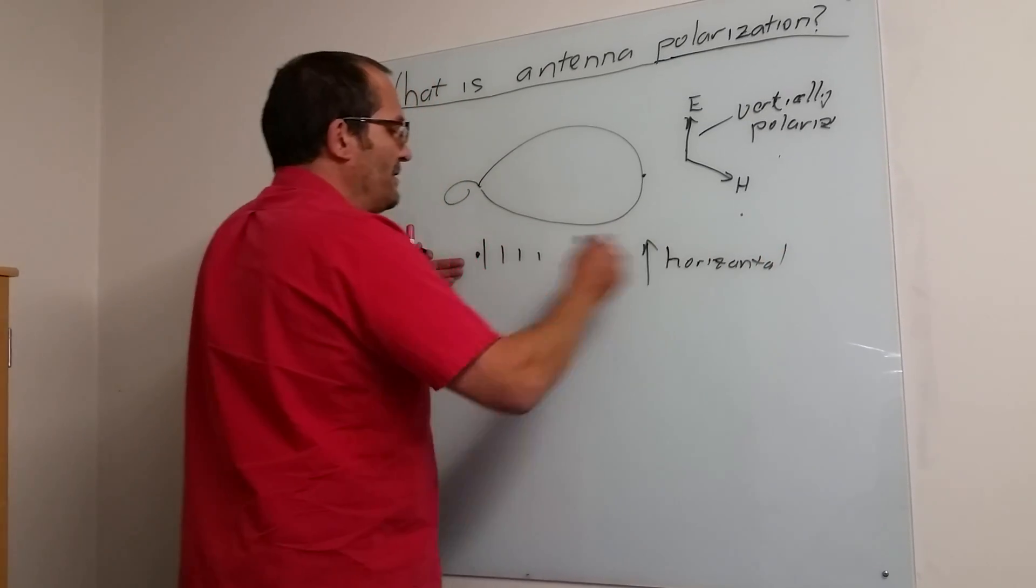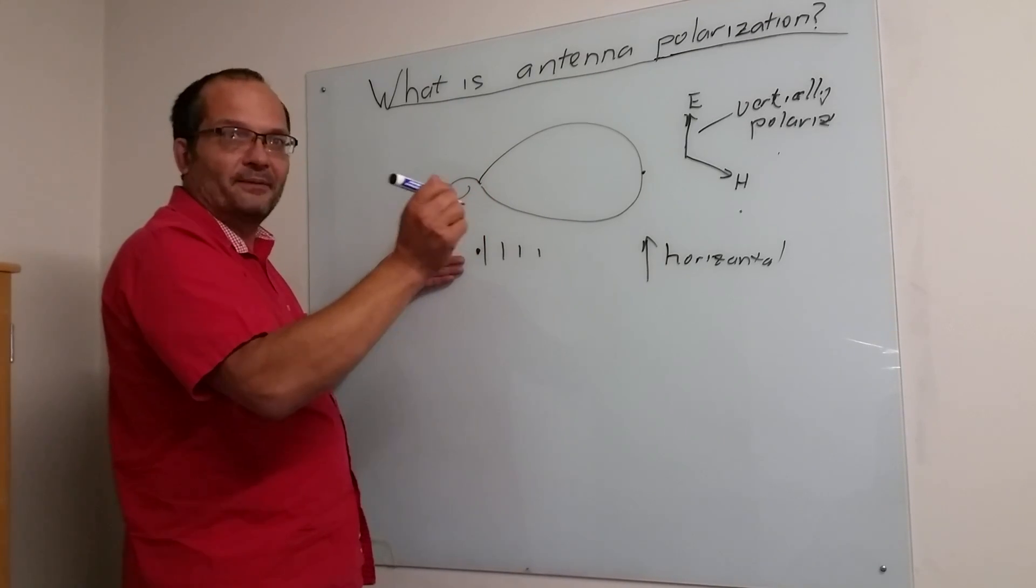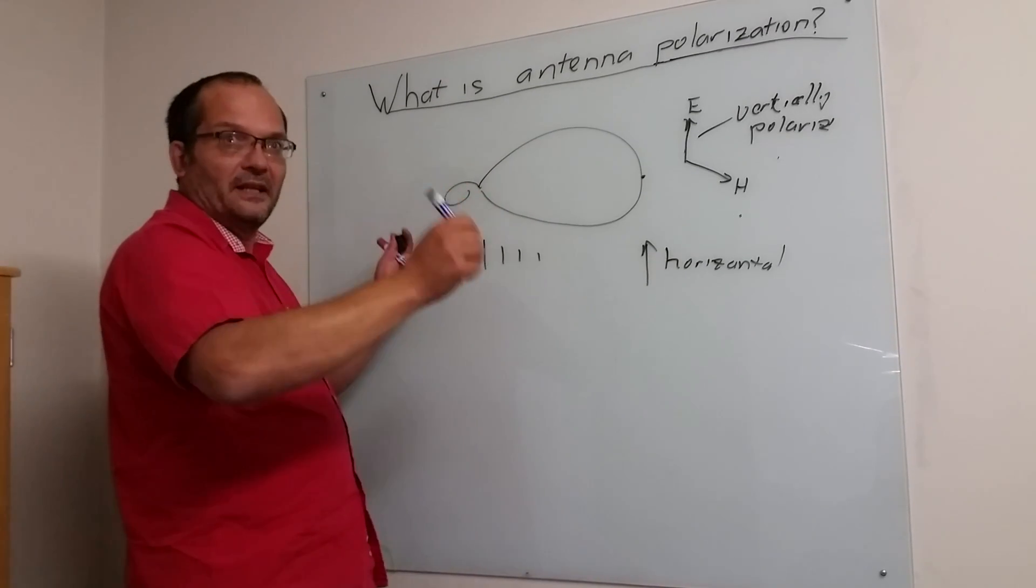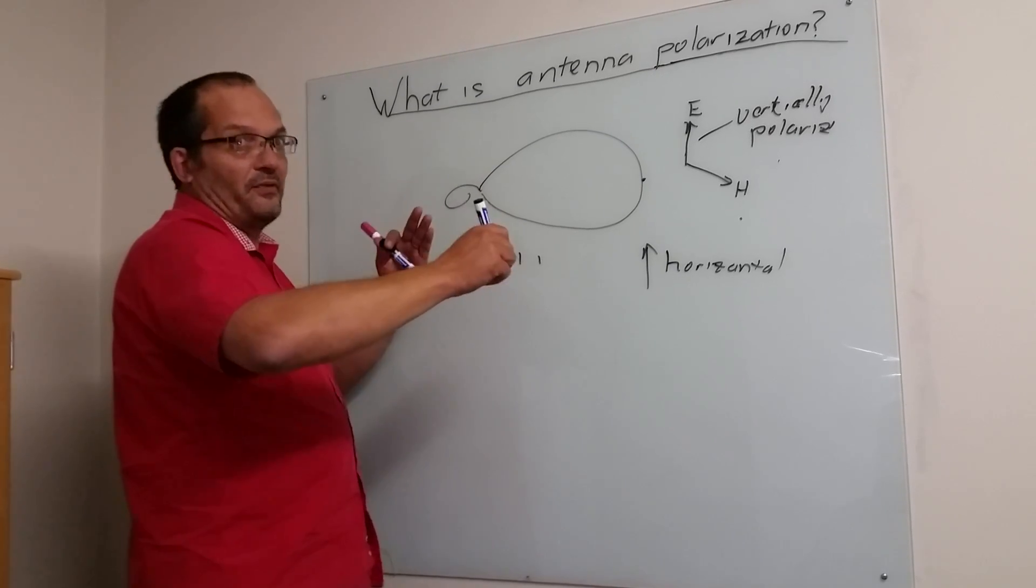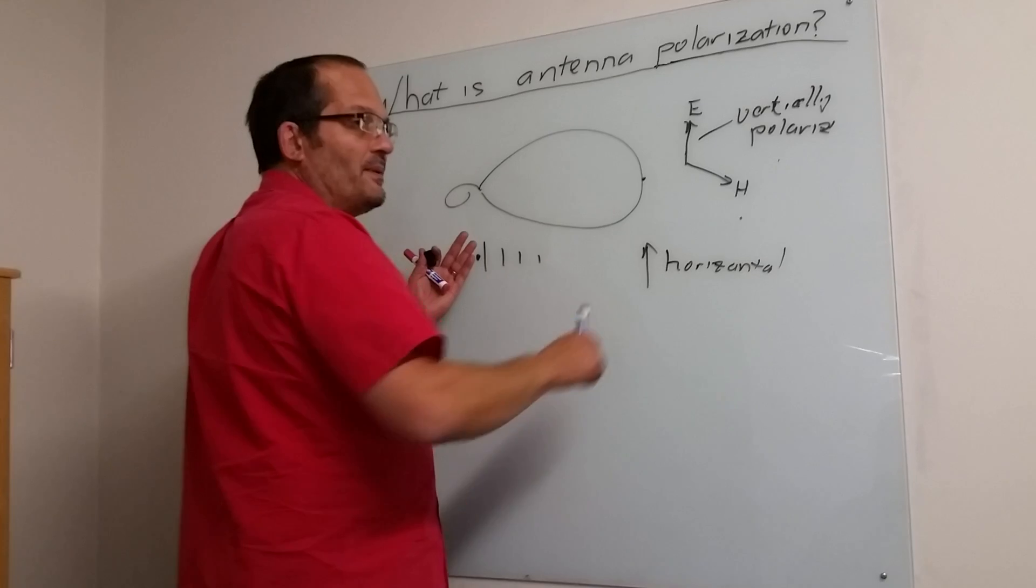If you try to receive with a horizontally polarized antenna a vertical signal, you get nothing, absolutely nothing. If it's perfectly aligned, you get the actual gain of the antenna. If it's 45 degrees, you get 3 degrees of the gain. So polarization needs to be aligned.